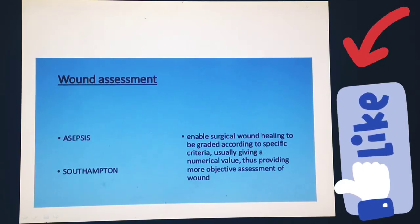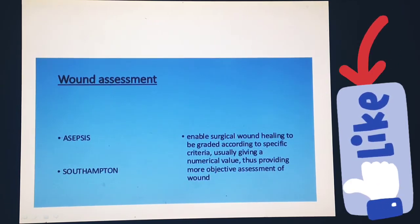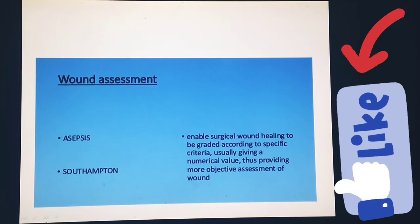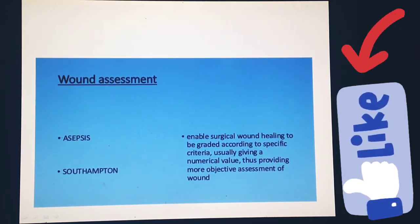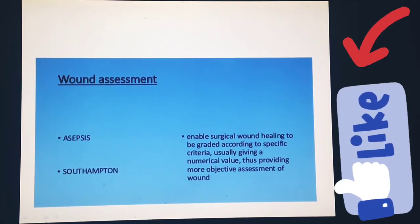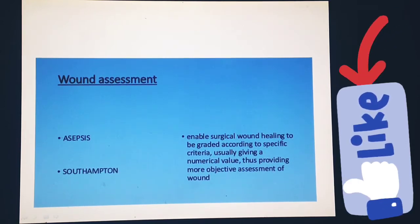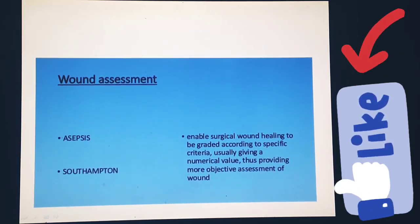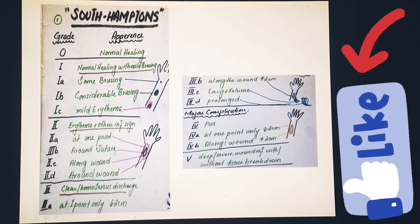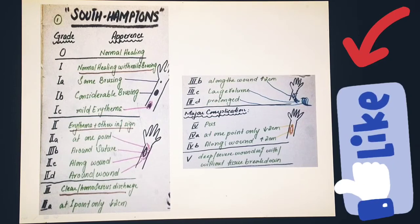After a person has received a surgical wound, we assess wound healing using two criteria: the Southampton criteria and the ASEPSIS criteria. These enable surgical wound healing to be graded according to specific criteria, usually given a numerical value, thus providing a more objective assessment of the wound. First, we discuss the Southampton criteria, which has five grades further subdivided into a, b, and c.